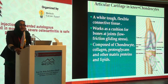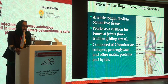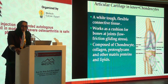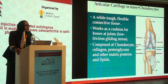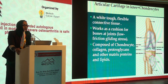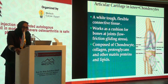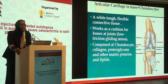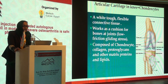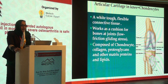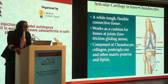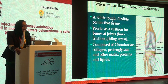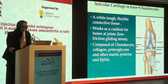What is the articular cartilage in the knee? It means functional chondrocytes. It is a wide, tough, flexible connective tissue that works like a cushion for the bone and joint to lower friction and gliding stress. It is composed of chondrocytes, collagen, proteoglycans, and other matrix proteins and lipids.